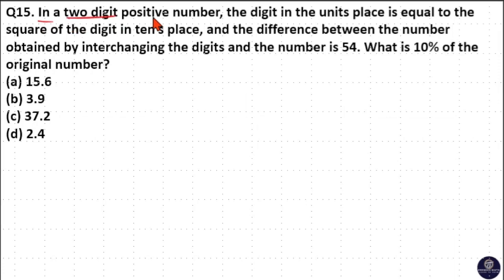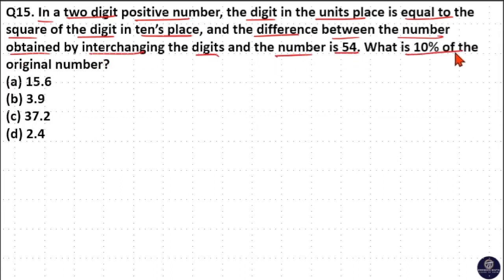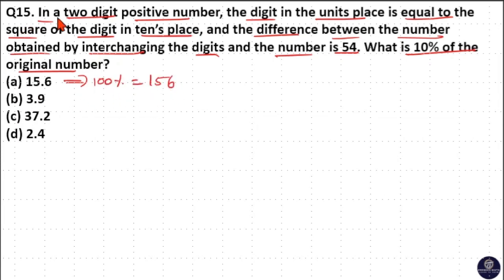In a two-digit positive number, the digit in the unit place is equal to the square of the digit in the tens place, and the difference between the number obtained by interchanging the digits and the original number is 54. What is 10% of the original number? Looking at the options: if 10% is 15.6, then 100% is 156, which is a three-digit number — so option A is wrong. Similarly, if 10% is 37.2, then 100% is 372, also three digits — option C is wrong.